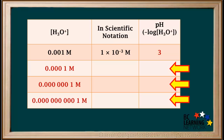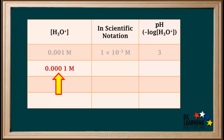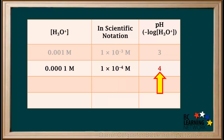Pause the video and try to complete the table for these on your own without a calculator, then resume the video to check your answers. In a different solution, the hydronium ion concentration is 0.0001 molar. In scientific notation, the concentration is 1 times 10 to the negative 4 molar, and the pH is just 4.